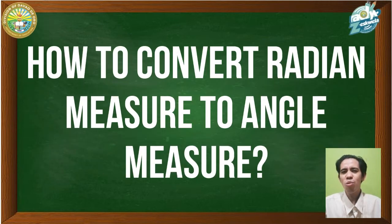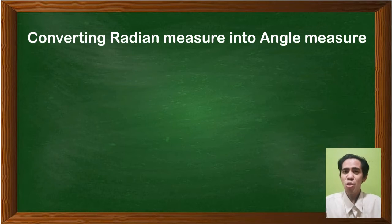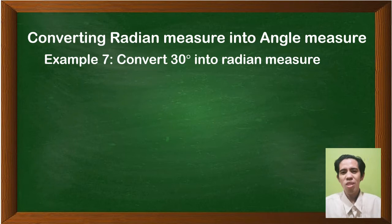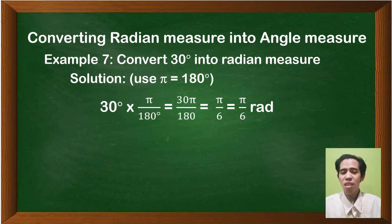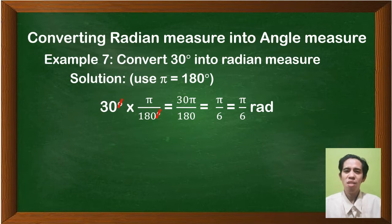Now, how are we going to convert radians into angle measure? For example number seven, convert 30 degrees into radian measure. We use π equal to 180 degrees, since one revolution equals 2π which equals 360 degrees. So 30 degrees multiplied by π over 180 degrees — cancel out degrees — gives 30π over 180. Simplify: that is π over 6 radians. Note that the word 'rad' can be either present or not.